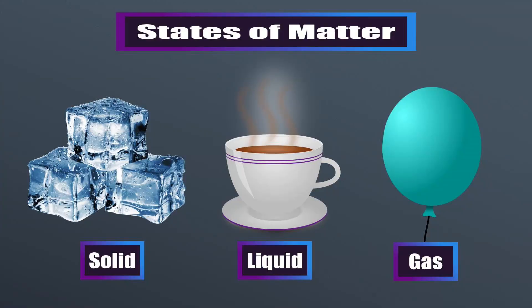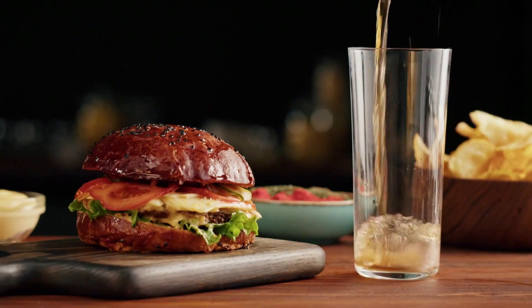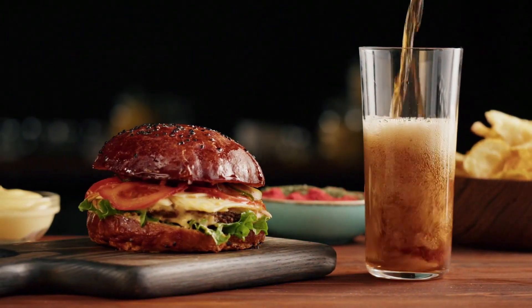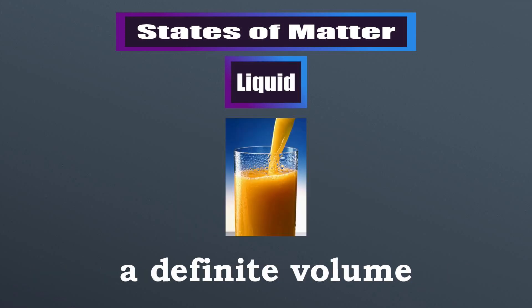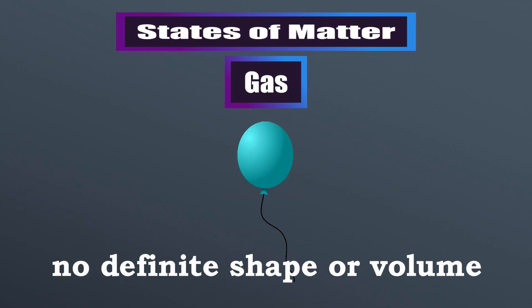In conclusion, we looked at the three main states of matter through our scenario in a restaurant with a sandwich and a drink. The sandwich was the solid, with a definite volume and shape. The drink was the liquid, which had no definite shape but a definite volume. And the gas was the air all around us, which had no definite shape or volume. Thanks so much for watching — see you in the next video!